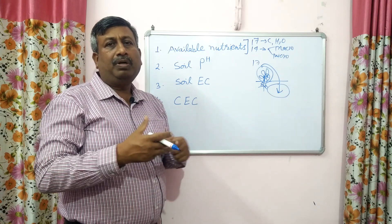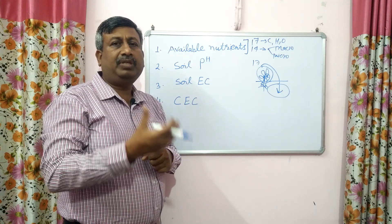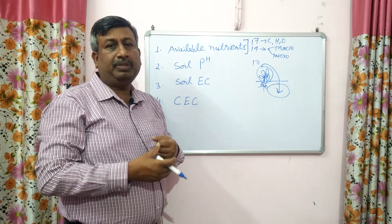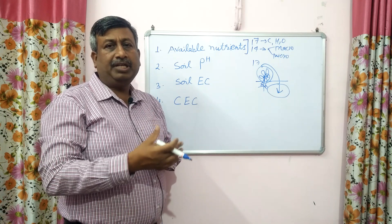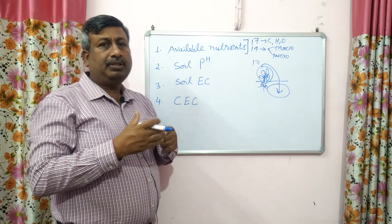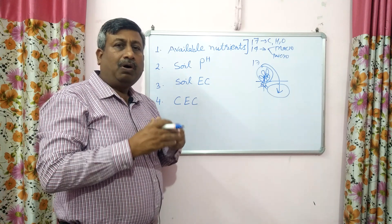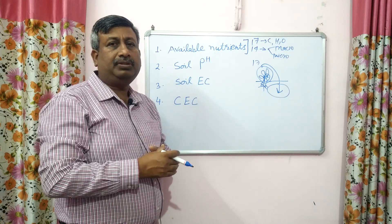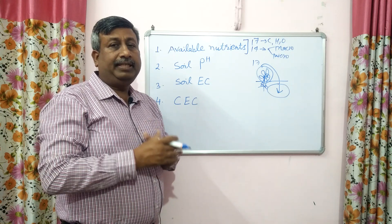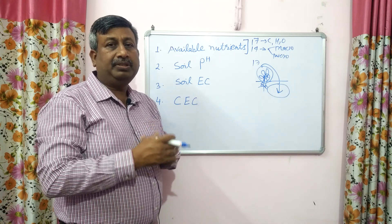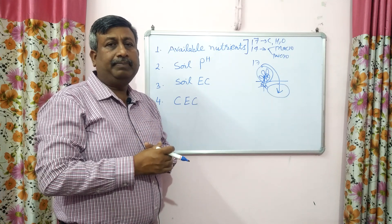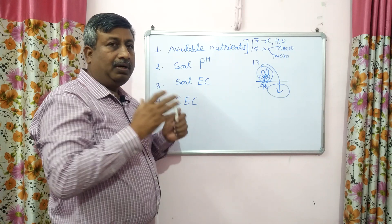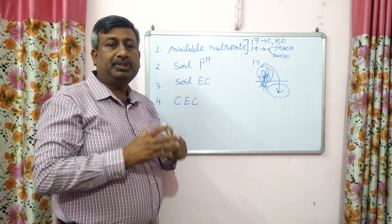In the case of fertilizer, only one or two nutrients are provided. For example, if we apply urea, only nitrogen is available. If we apply DAP, then nitrogen and phosphorus. MOP gives only potassium. If we apply SSP, then phosphorus, calcium, and sulfur. So only two or three nutrients are provided by fertilizer. But in the case of organic matter — FYM, compost, dung, crop residue — all essential nutrients are maintained, plant growth is good, and soil health is very good.